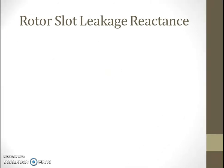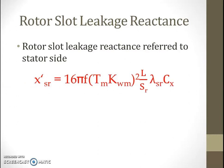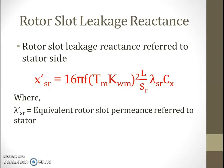In the same way we can calculate rotor slot leakage reactance. Rotor slot leakage reactance referred to the stator side is given as X'_sr (suffix s for slot, r for rotor; dash because it is referred to the stator side), and that can be given by the similar equation: 16π·f·T_m·K_wm²·L divided by S_r, multiplied by λ_sr and C_x, where λ'_sr is the equivalent rotor slot permeance referred to the stator.